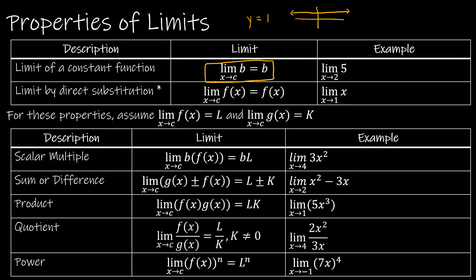It doesn't matter what x is. In this case, we're saying the limit as x approaches 2 of 5. So as x approaches 2 from the left, the y value is 5, and from the right, the y value is 5. So it makes perfect sense the y value would be 5.